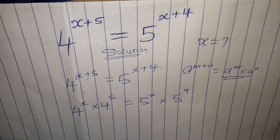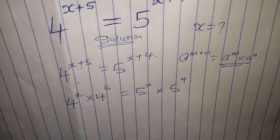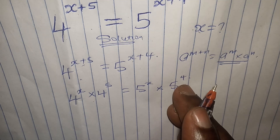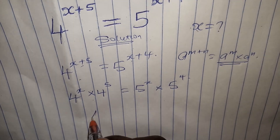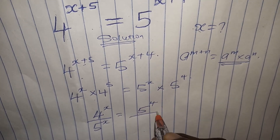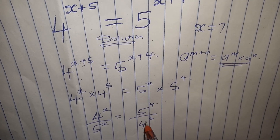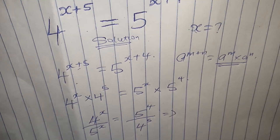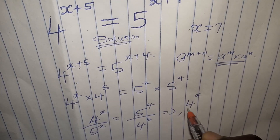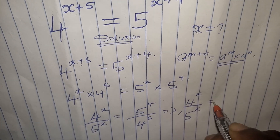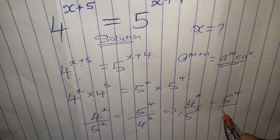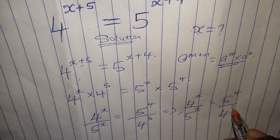We want to make the x terms stand on one side and the numbers without x on the other side. So we have 4^x over 5^x equals 5 to the power of 4 over 4 to the power of 5.